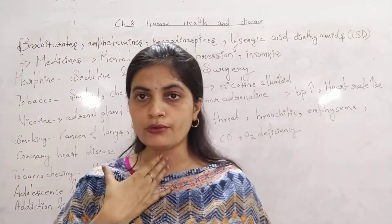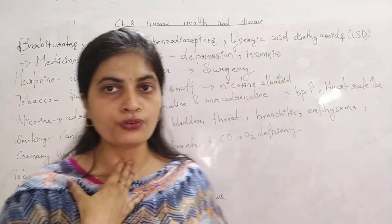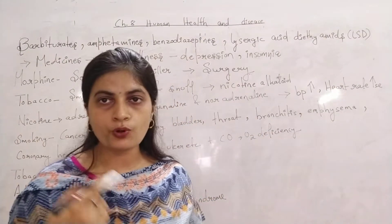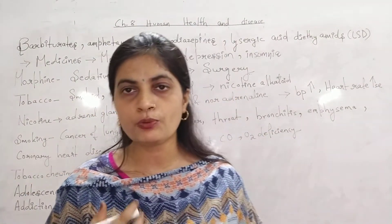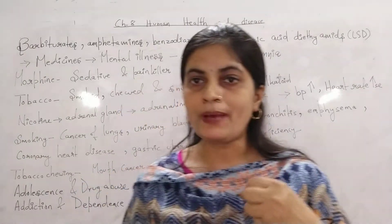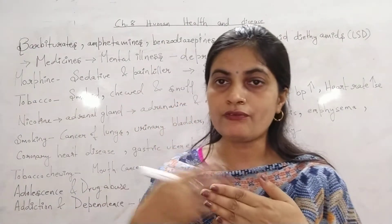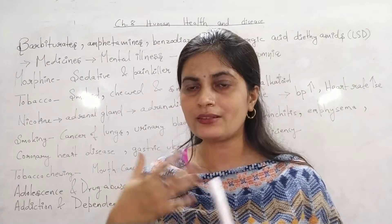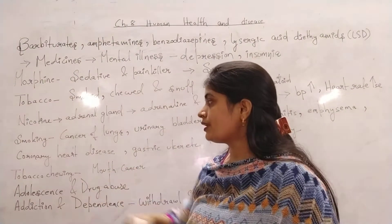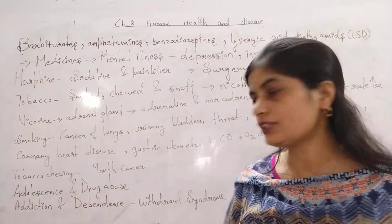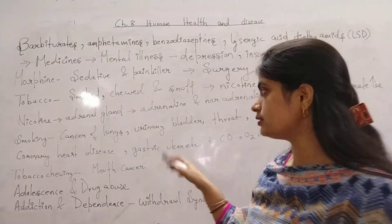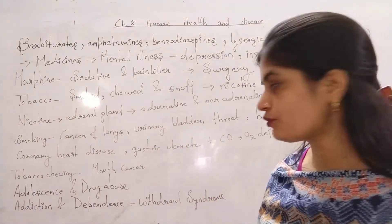Since everything passes through the throat region during smoking, cancer of the throat can also occur. There are also chances of bronchitis — inflammation in the bronchial region causing breathing problems. Emphysema involves narrowing of the air passage, causing oxygen deficiency in the body, leading to asthma-like shortness of breath. Coronary heart disease and heart problems can arise, as well as gastric ulcers inside the stomach due to tobacco consumption.